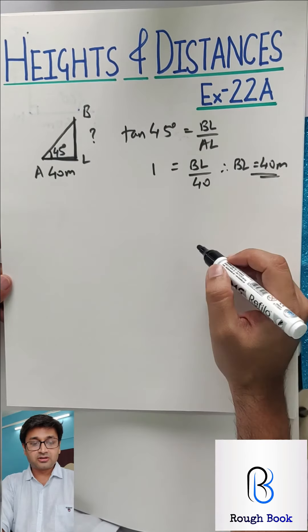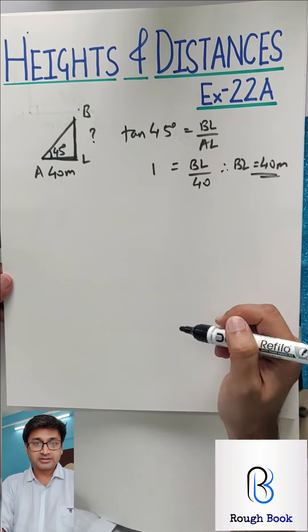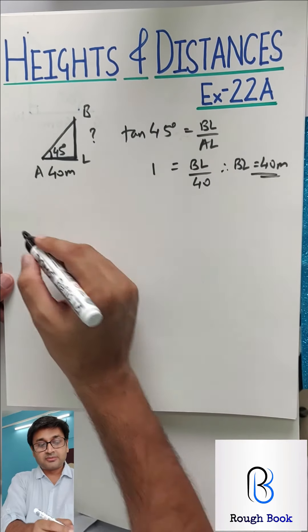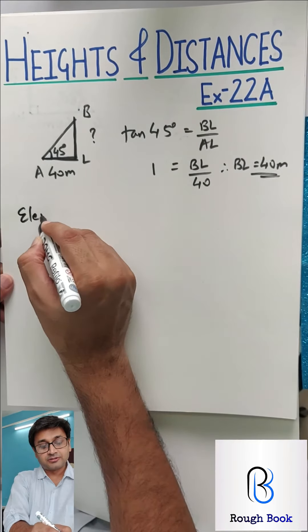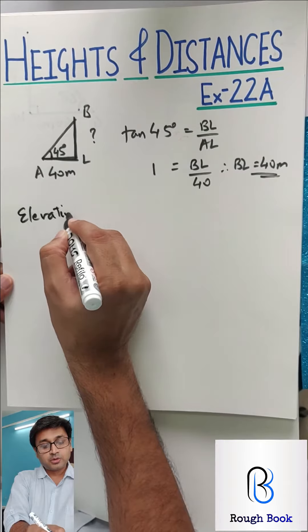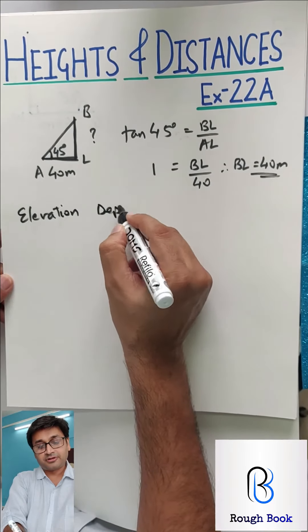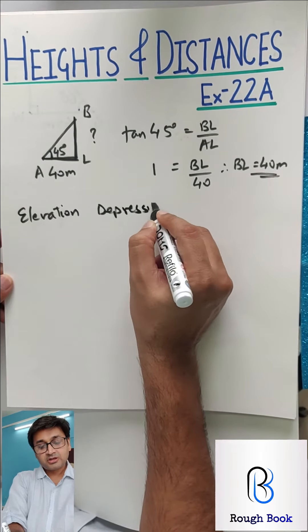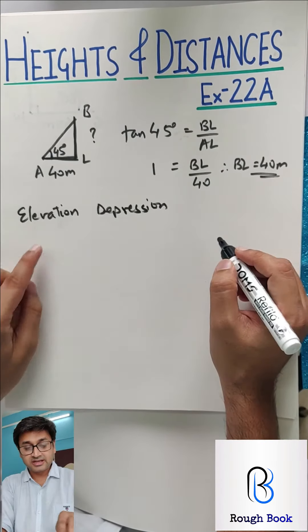So before we get straight to the topic, three things you need to understand. Number one, there is something called angle of elevation. Number two, there is something called angle of depression.